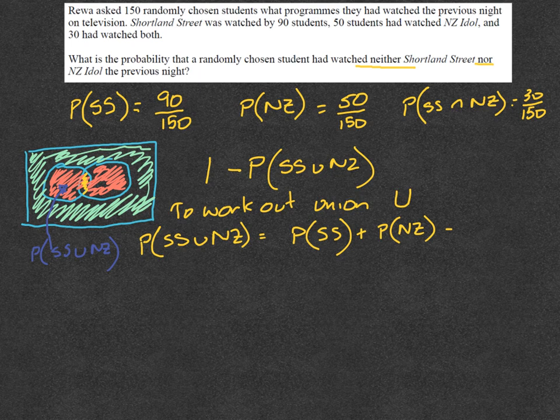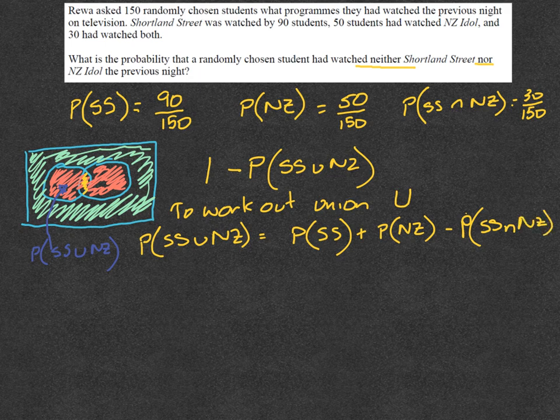This bit here in the middle, because we don't want to count that twice. So minus the probability of SS intersection New Zealand Idol. And you'll notice you've got all that information up above.